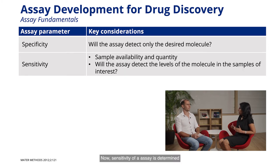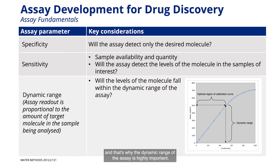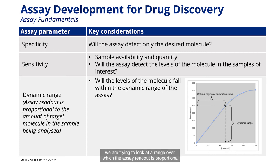Sensitivity of an assay is determined by the sample availability and quantity. We have to ensure that the assay is sufficiently sensitive to detect small changes in the reaction, and that's why the dynamic range of the assay is highly important. When we talk about dynamic range, we are trying to look at a range over which the assay readout is proportional to the amount of protein molecule in the sample being analyzed.